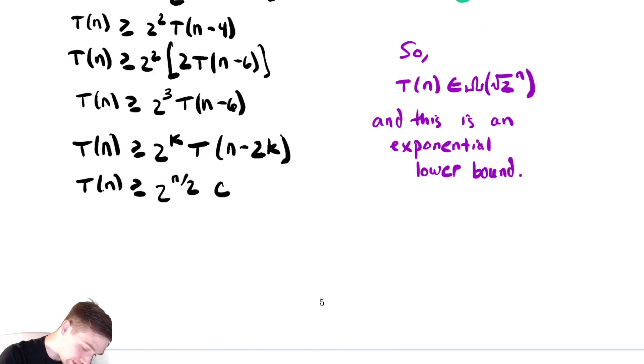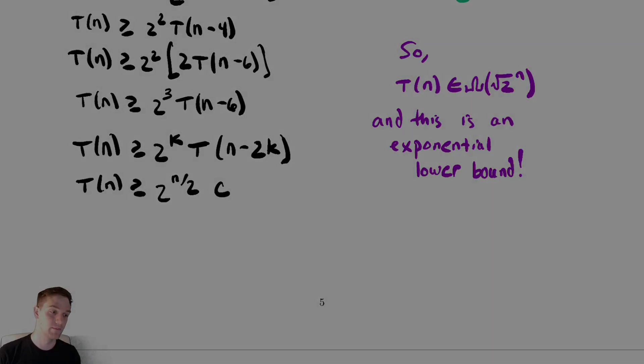By pure coincidence this just happened to be the same as the last one. You may get different exponential lower bounds as long as your bound is a number raised to the n it will be an exponential lower bound.